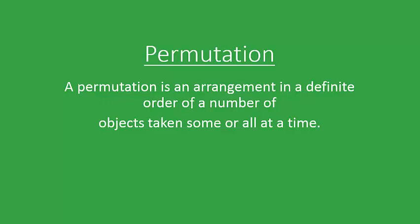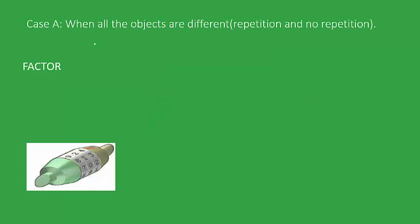Permutation is an arrangement in a definite order of a number of objects taken some or all at a time. Let's try to understand the concepts we have learned till now, and specifically the principle of fundamental counting, through this example.